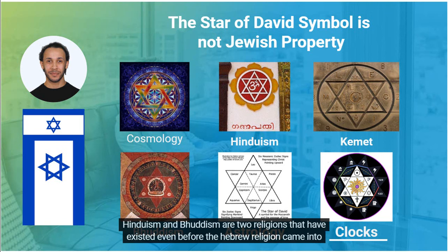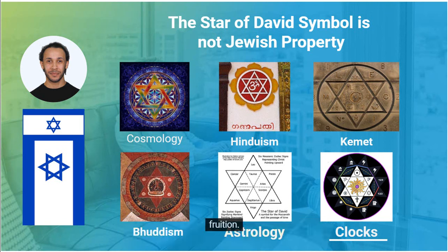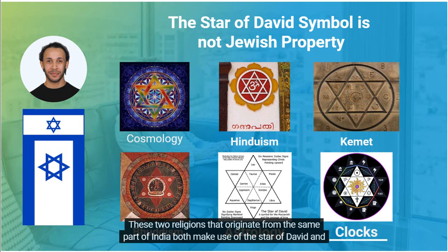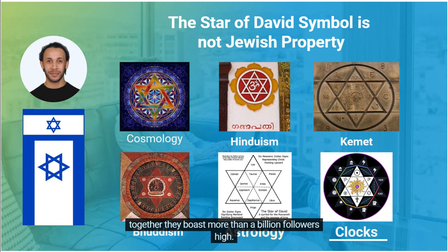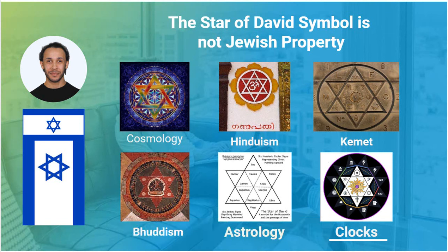Hinduism and Buddhism are two religions that have existed even before the Hebrew religion came into fruition. These two religions, which originate from the same part of India, both make use of the Star of David, and together they boast more than a billion followers. Let us look deeper into this key symbol.